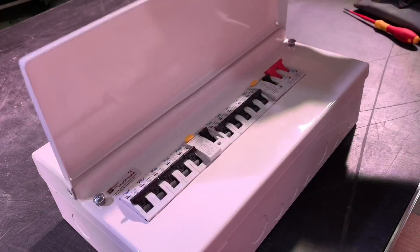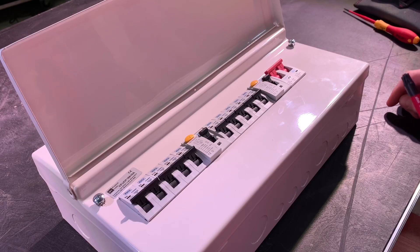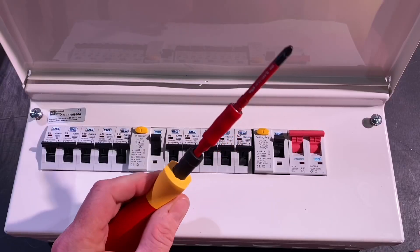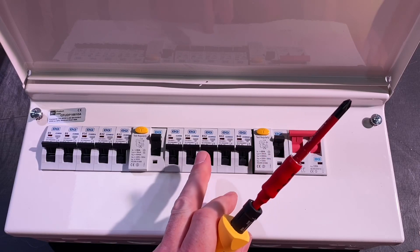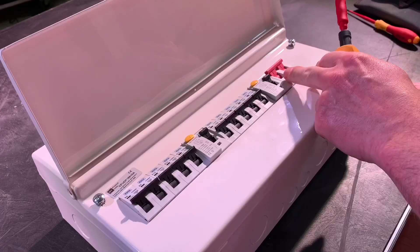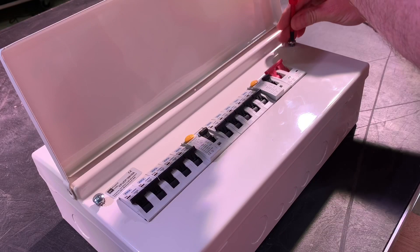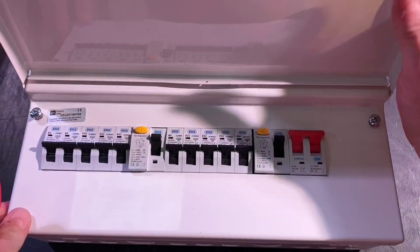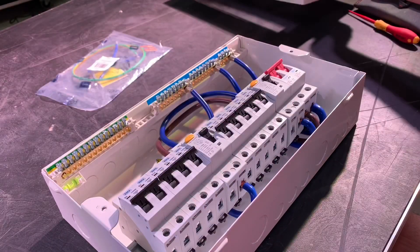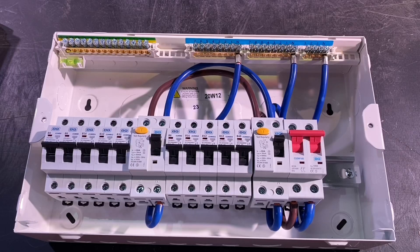I've been assured that this consumer unit only needs one type of screwdriver to make the connection. I've got my slotted posi because I'm going to need it for the torque settings of both my overcurrent protection devices and main switch. The screws themselves are captive, so I shouldn't lose those. Now we can take a closer look at what's going on inside the consumer unit.